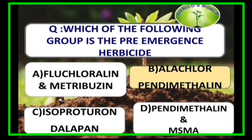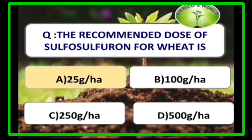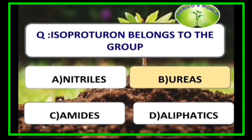Alachlor and pendimethalin are pre-emergent herbicides. Pre-emergent herbicides are applied two to three days after sowing, before emergence of the crop. The recommended dose of sulfosulfuron for wheat is 25 grams per hectare. Isoproturon belongs to the group Ureas.